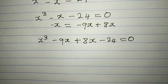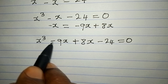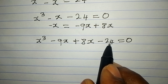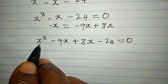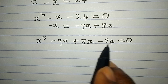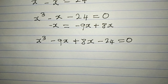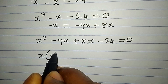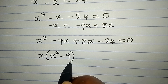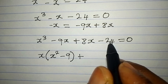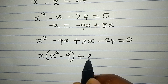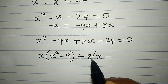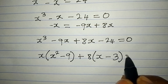Now we can group to factorize. If we factorize 8x minus 24 and x to the power of 3 minus 9x, we get something that can be likened to each other. What is common to x³ minus 9x is x, giving us x(x² minus 9). What is common to 8x minus 24 is 8, giving us 8(x minus 3).